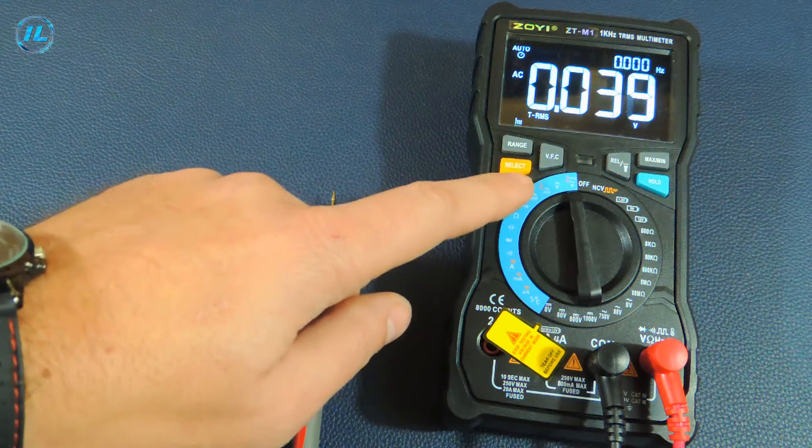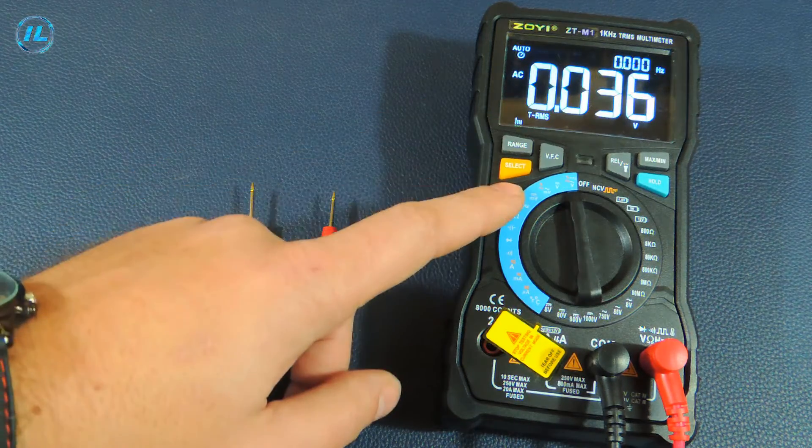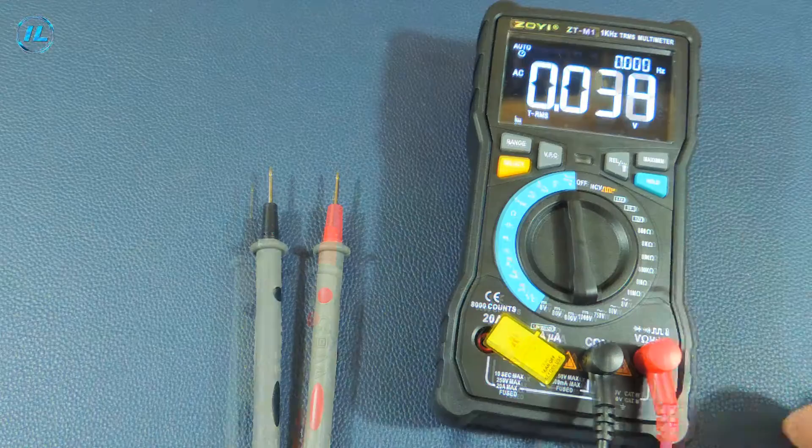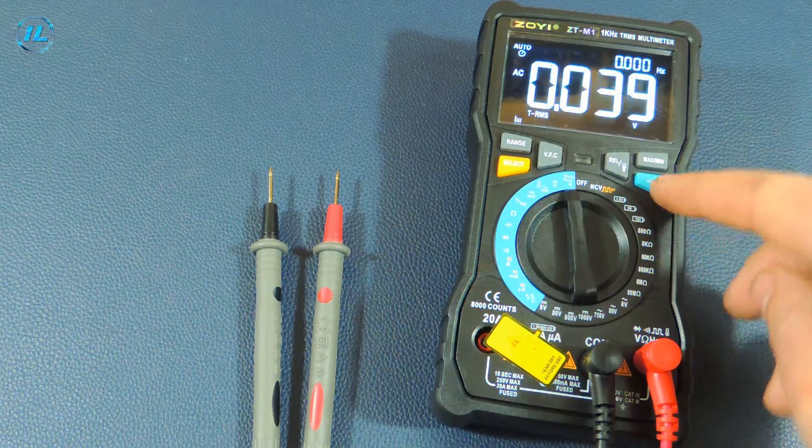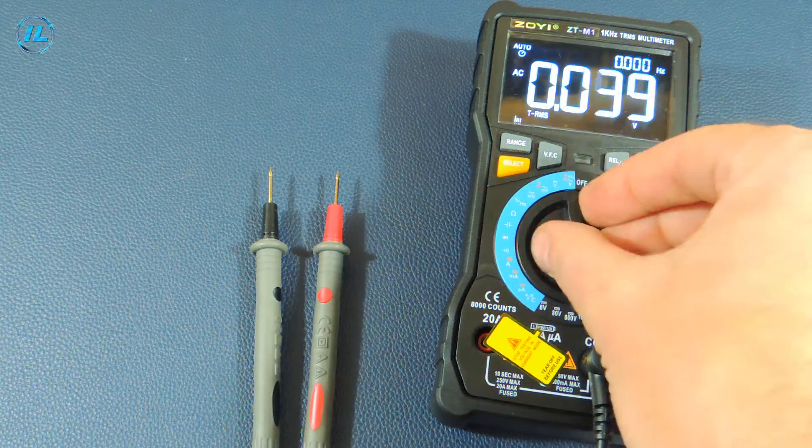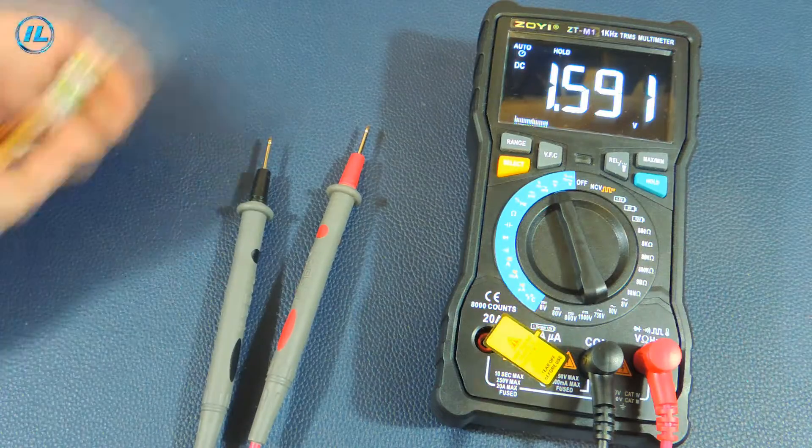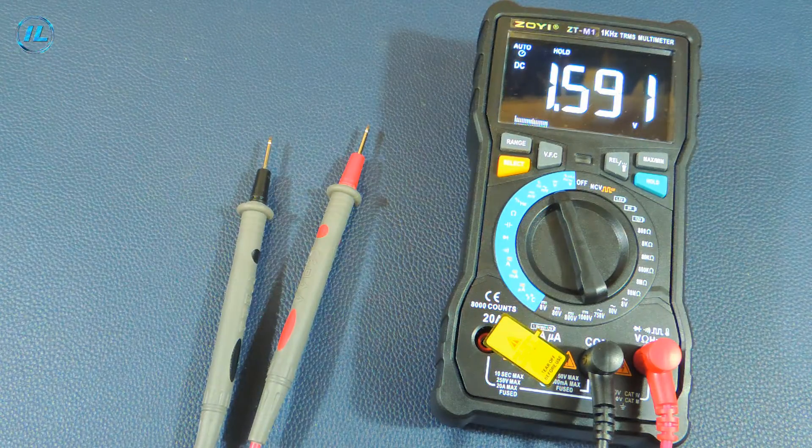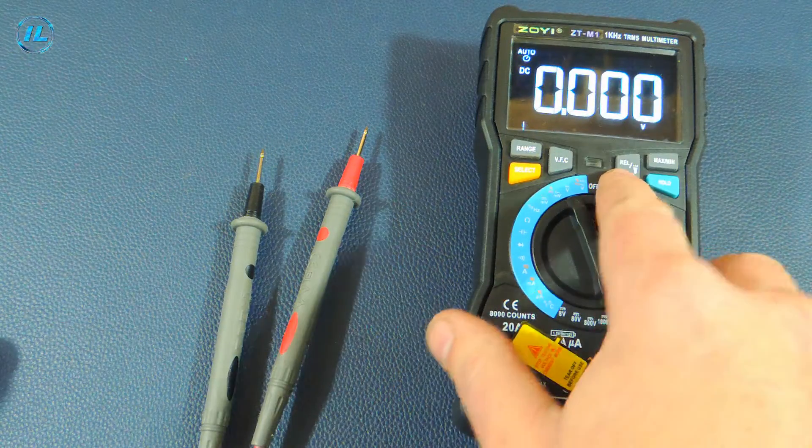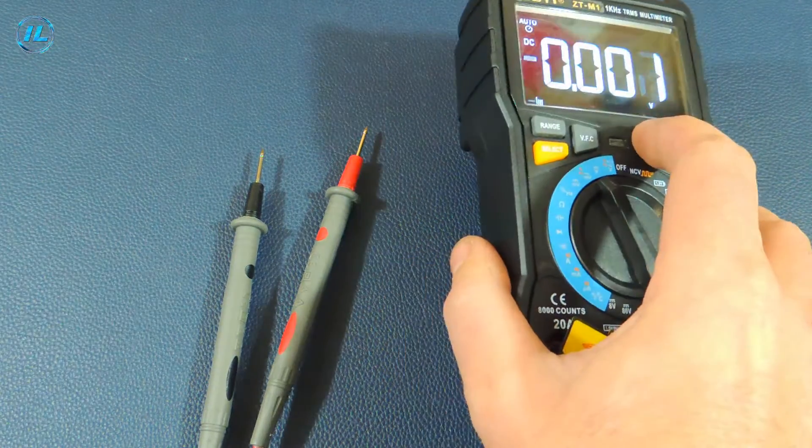Also at this point, using the select button, you can turn on the frequency measurement mode. Using the hold button, you can record the measurement results on the screen. And the result remains on the screen. When the REL button is pressed for a long time, the flashlight turns on and off.